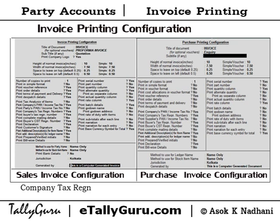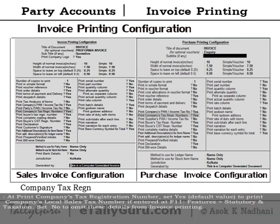Company tax registration. At print company's tax registration number, set yes — which is the default value — to print the company's local tax or sales tax number if entered at F11 Features, Statutory Taxation. Set no to omit these details from invoice printing.